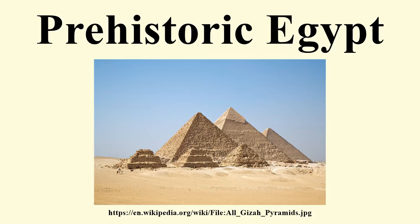From about 5000 to 4200 BC, the Merimda culture, so far only known from a big settlement site at the edge of the western delta, flourished in Lower Egypt. The culture has strong connections to the Fayum culture as well as the Levant. People lived in small huts, produced a simple undecorated pottery, and had stone tools. Cattle, sheep, goats, and pigs were held. Wheat, sorghum, and barley were planted. The Merimda people buried their dead within the settlement and produced clay figurines.